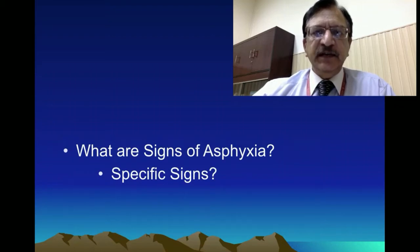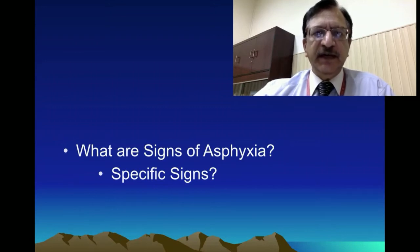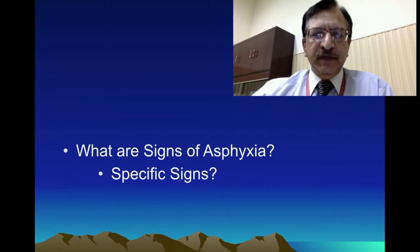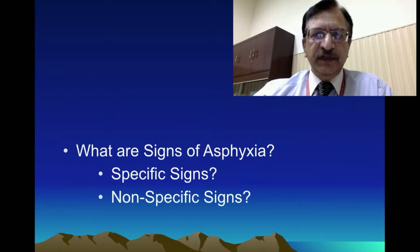These signs are either specific signs. Specific signs mean because of the mechanical interference at the level, and at that level there are certain pathological changes which are seen — they are called specific signs. When we discuss each pathological cause and that interference at which level, we will discuss these specific signs in detail. Then there are non-specific asphyxial findings which appear in each asphyxial death, and we will discuss those changes in detail in this lecture.